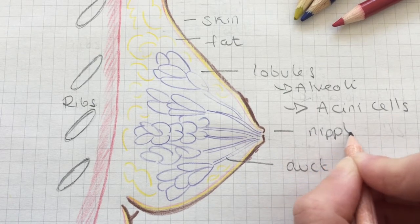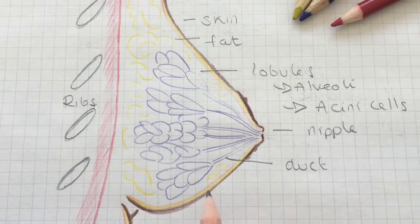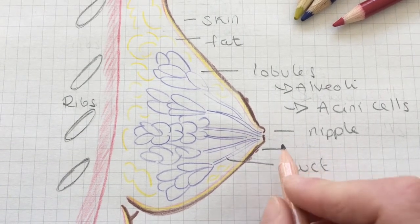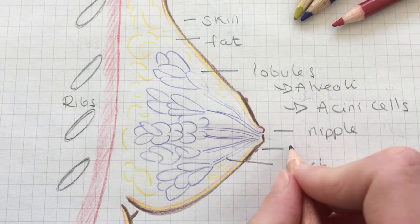And around the nipple we have the areola. So it's a pigmented area of skin, and on the areola we also have Montgomery's tubercles. These produce a sebum-like substance that lubricates the nipples.